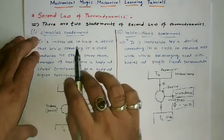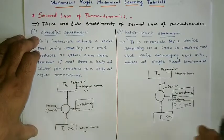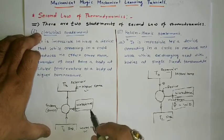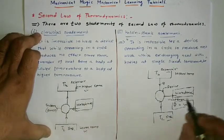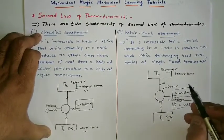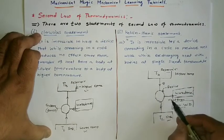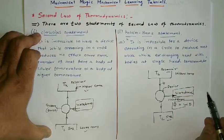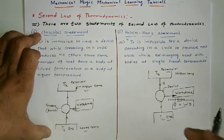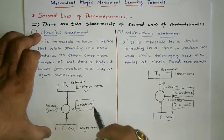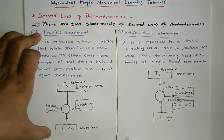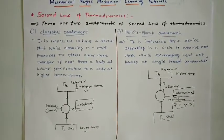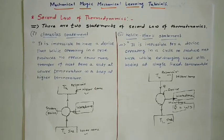Both the Clausius statement and the Kelvin-Planck statement generally say: in the Clausius case, without work done you cannot increase temperature from lower to higher. In the Kelvin-Planck case, by applying a temperature difference you can get energy that converts into work done. So work done depends on temperature difference and heat energy converting into another form of energy. Both statements express the same idea in different ways, and together they form the second law of thermodynamics.